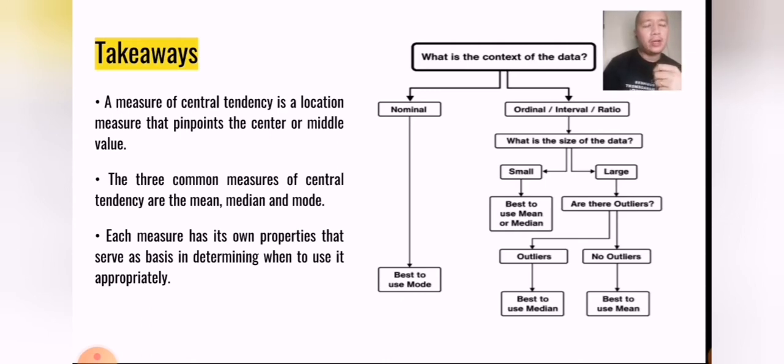First, you would have to ask yourself, what type of data do you have? Is it nominal? Because if it's nominal, then it's best to use mode. If it's ordinal, interval, or ratio, you would be drilled down to the next question: What is the size of the data? If it's small, it's best to use mean or median. If it's large, the next question is, are there outliers? Because if there are outliers, you should use median. And if there are no outliers, it's best to use mean.